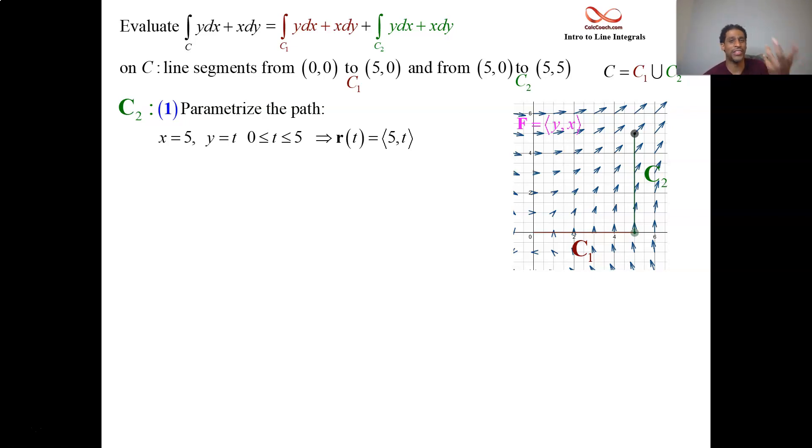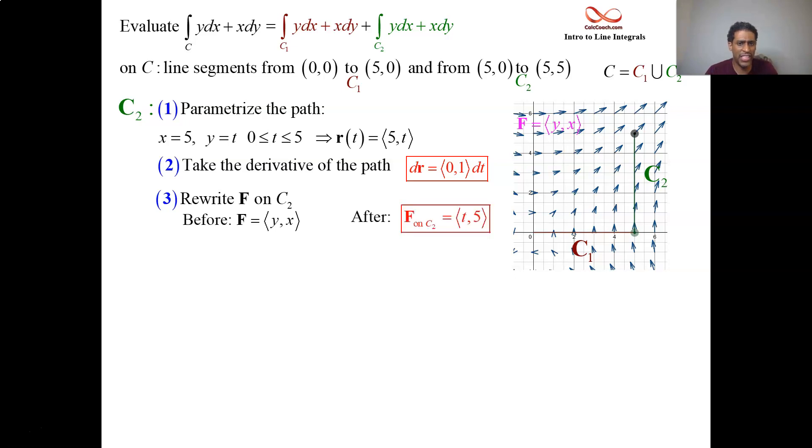What's nice when you have these constants, when you go take the derivative, you get 0. So step two, take the derivative of the path. The derivative of 5 is 0. Derivative of t is 1. They both are with a dt on it, so we factor that dt out. Third step, rewrite f so you're only concerned about what's above the path. So c2 it's called, replacing the y with a t, replacing the x with a 5. It's the vector t comma 5.